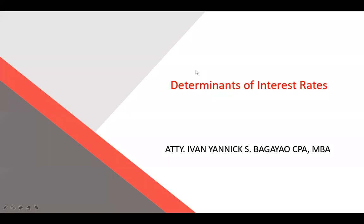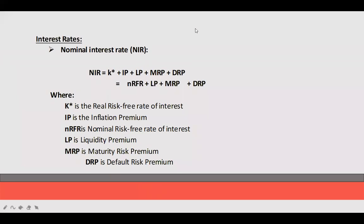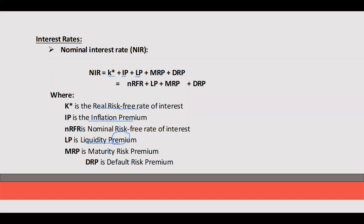Determinants of interest rate. We have the nominal interest rate, composed of the real risk-free rate (K), inflation premium — the additional payment due to the effect of inflation which affects the purchasing power of money — and liquidity premium, the additional payment for the hardship of converting a debt security into cash.